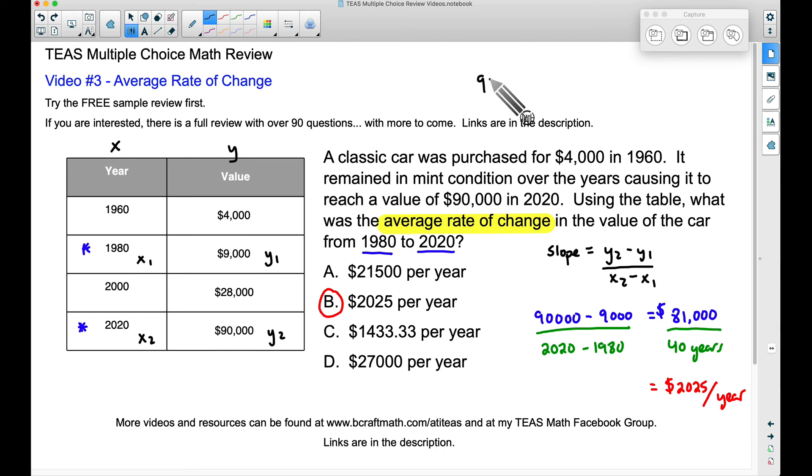And to see that written out, how I was checking my work, a way you can kind of guess and check, we take that value of $9,000 and we're going to add on $2,025 per year, but we're talking about 40 years. And if you crunch this out using the order of operations, as I just showed you a moment ago, you will get $90,000, which is the value of that car in the year 2020. So there you have it, somewhat of a thorough explanation involving average rate of change. Now you can see this in tables, graphs, and all sorts of other things as well.